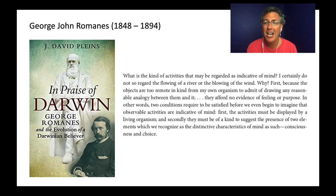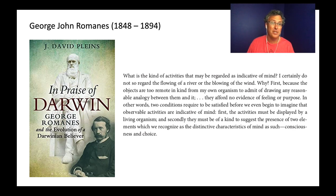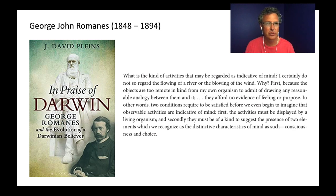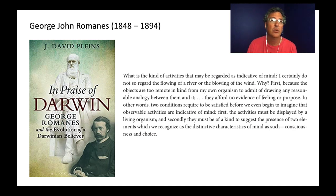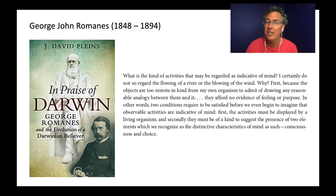The second condition is that the activities must be of a kind to suggest the two elements we recognize as distinctive characteristics of mind: consciousness and choice. By choice he means rational choice — not just picking between two foods, but evidence of weighing options. So Romanes was out looking for minds in other animals: do they have consciousness? How similar or different is it from ours? Those are the core questions of comparative psychology.